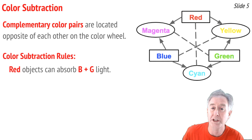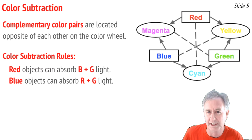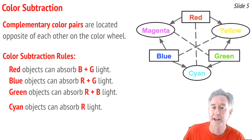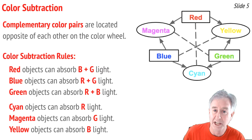A red object is going to absorb cyan light, or simply blue and green light. A blue object absorbs the color opposite it on the wheel — yellow light, or red and green light. A green object absorbs magenta light, or red and blue light. It works the opposite way as well: a cyan object absorbs red light, a yellow object absorbs blue light, and a magenta object absorbs green light. That's how you use complementary color pairs to predict what color of light an object would absorb.